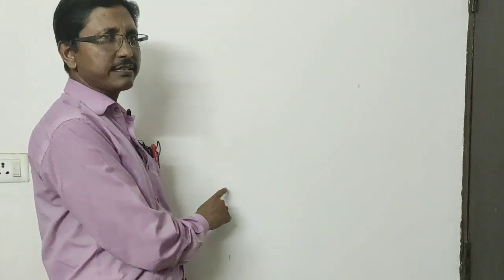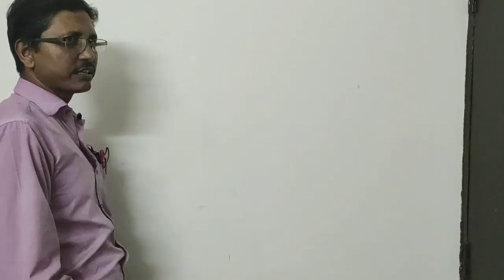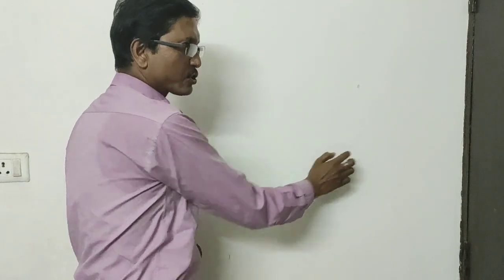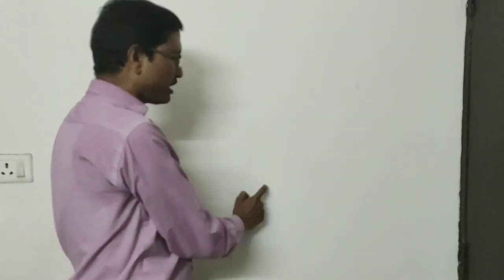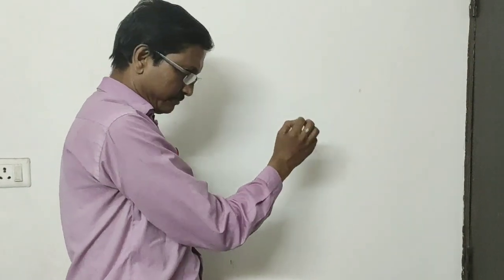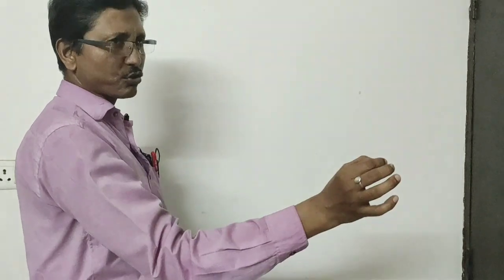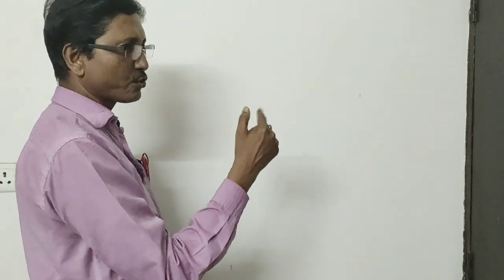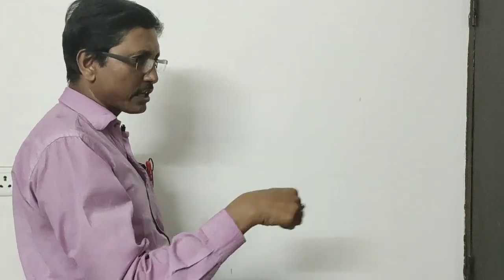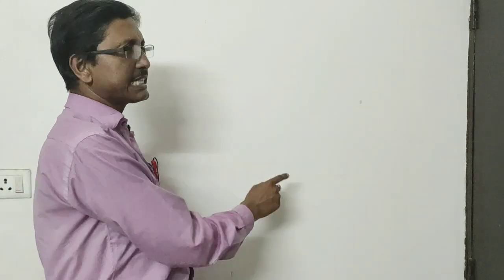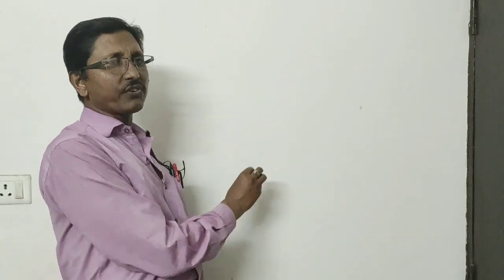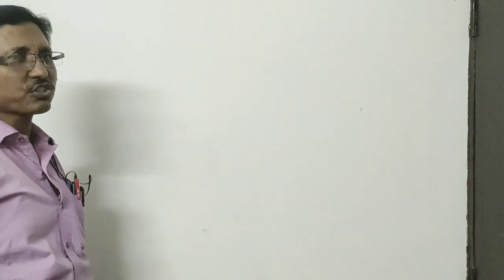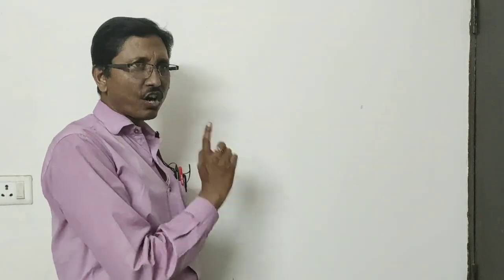And the last case, case 3, when R equals 2, A square becomes 9Q square plus 12Q plus 4. That 4 can be written as 3 plus 1. Means A square becomes 9Q square plus 12Q plus 3 plus 1. From there also you can take 3 common, so it will come 3 into 3Q square plus 4Q plus 1, whole bracket plus 1. That means it is also coming 3M plus 1, where M is also an integer. So the square of any positive integer can be expressed in the form of 3M or 3M plus 1.